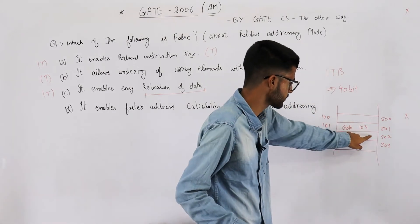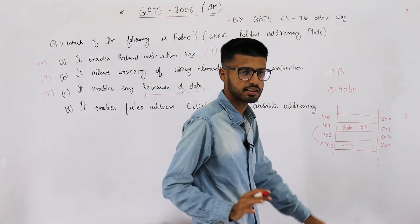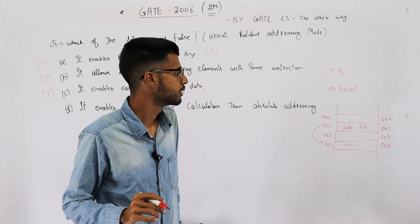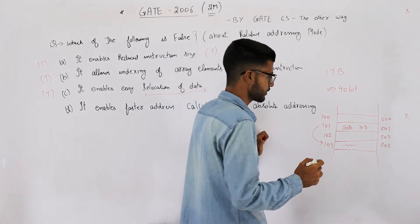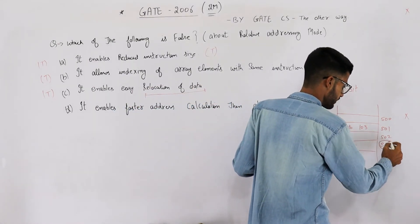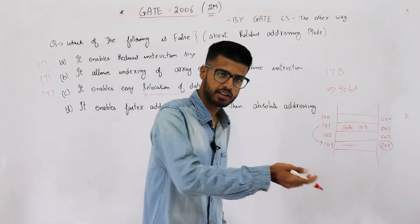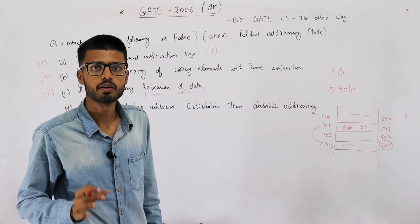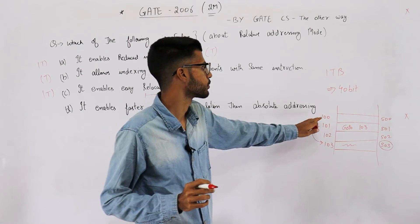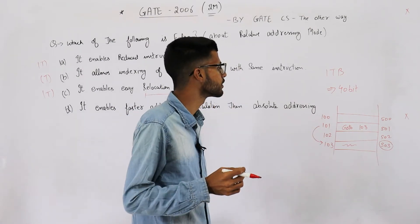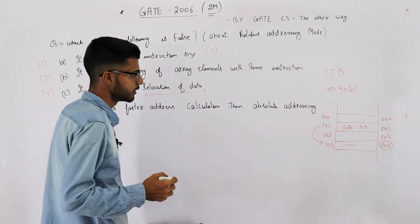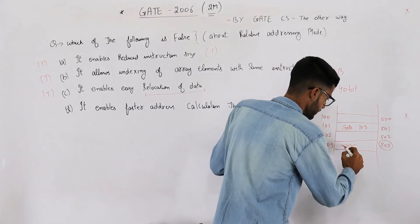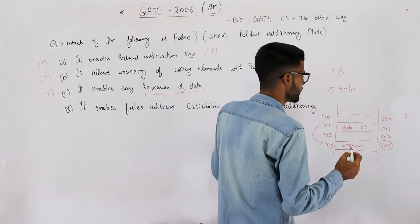So to skip this line, writing goto 103 won't work now because here you need to write goto 503. That way, every time the program gets loaded into RAM, you need to know the base address of the program. But a better solution is using relative addresses. You just specify the relative address of this line.